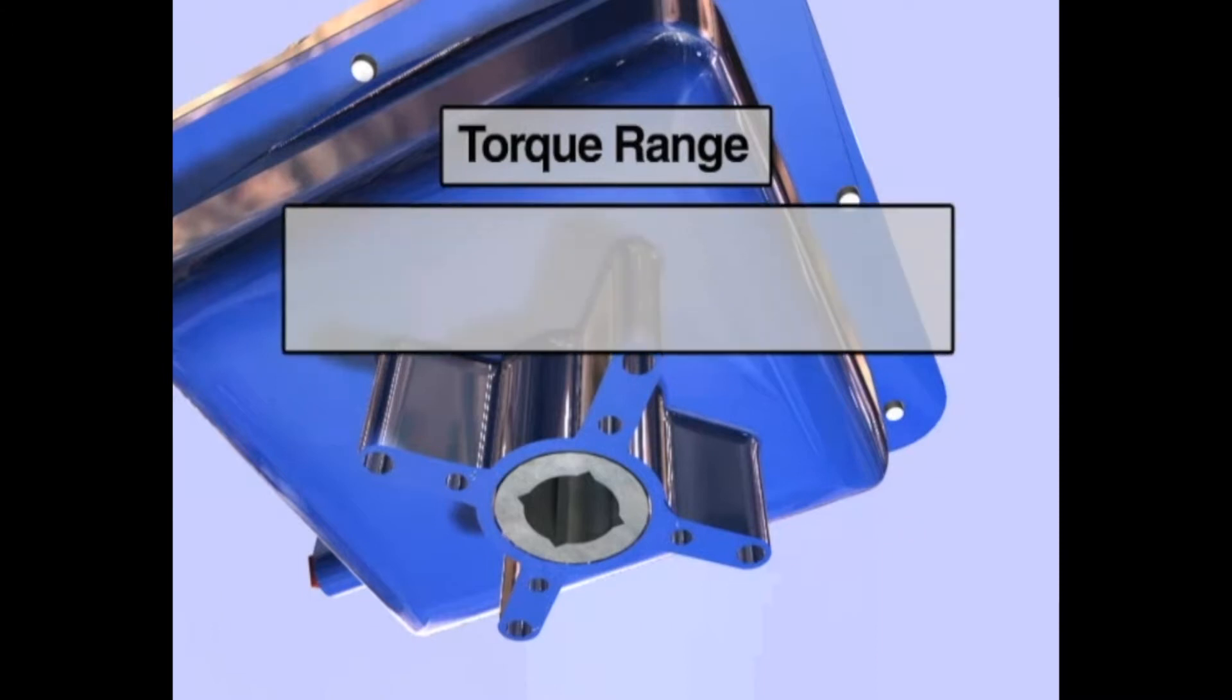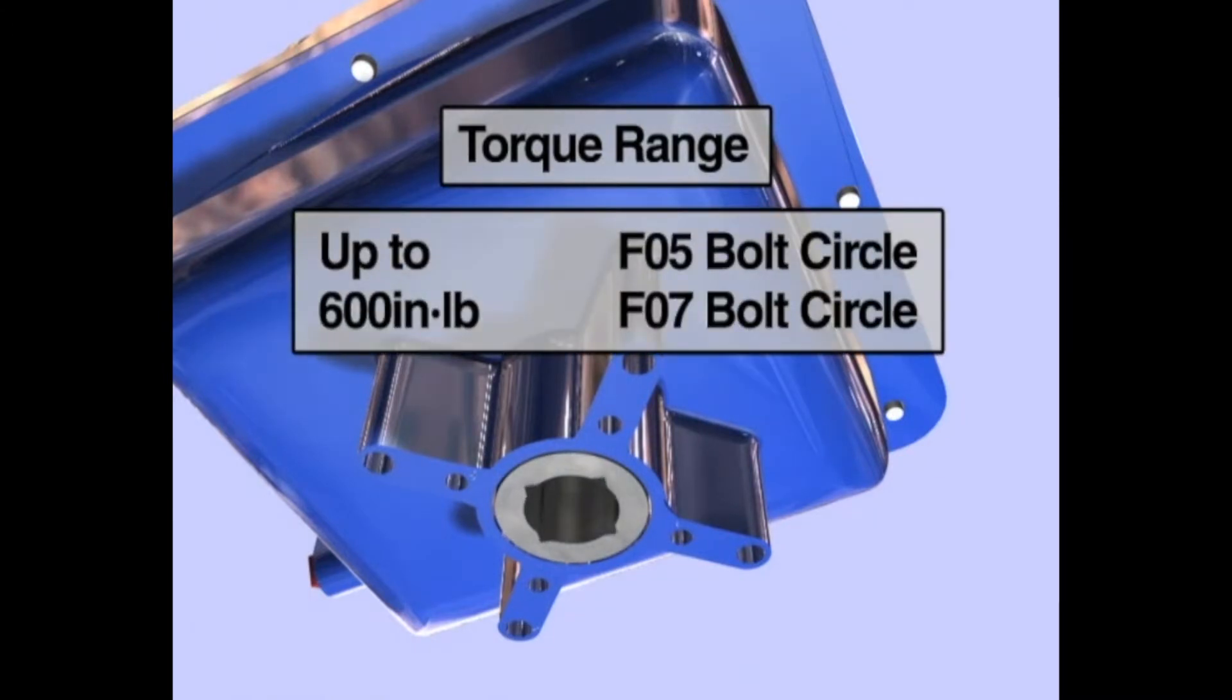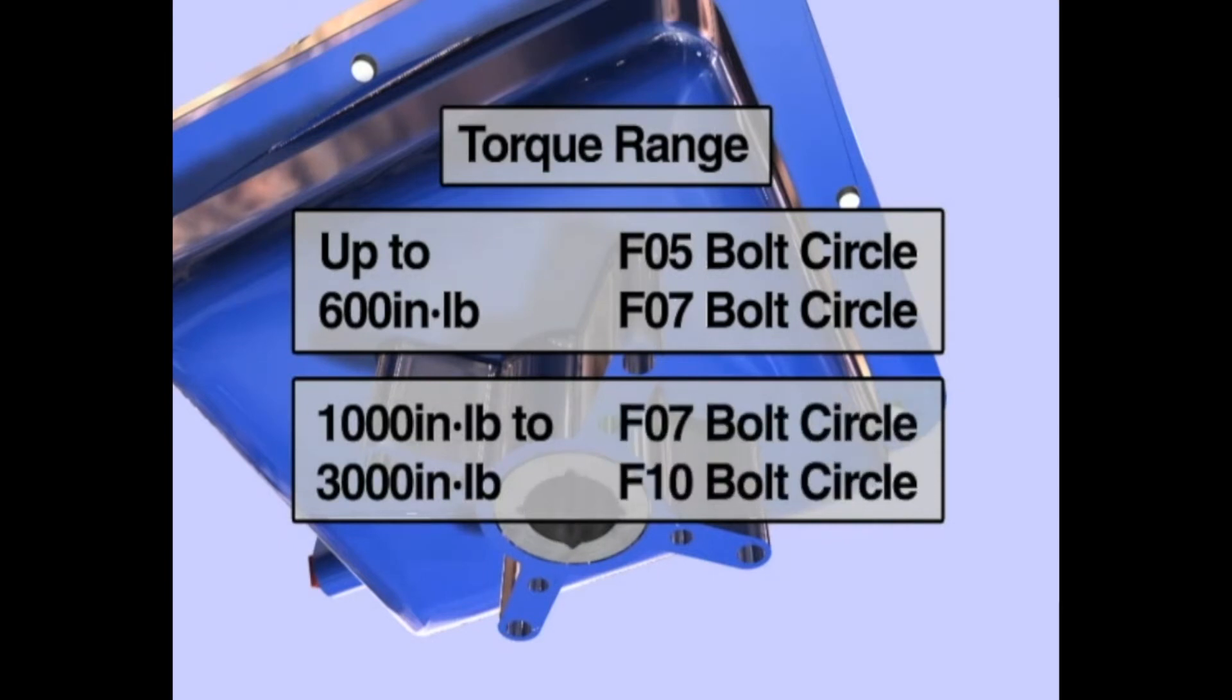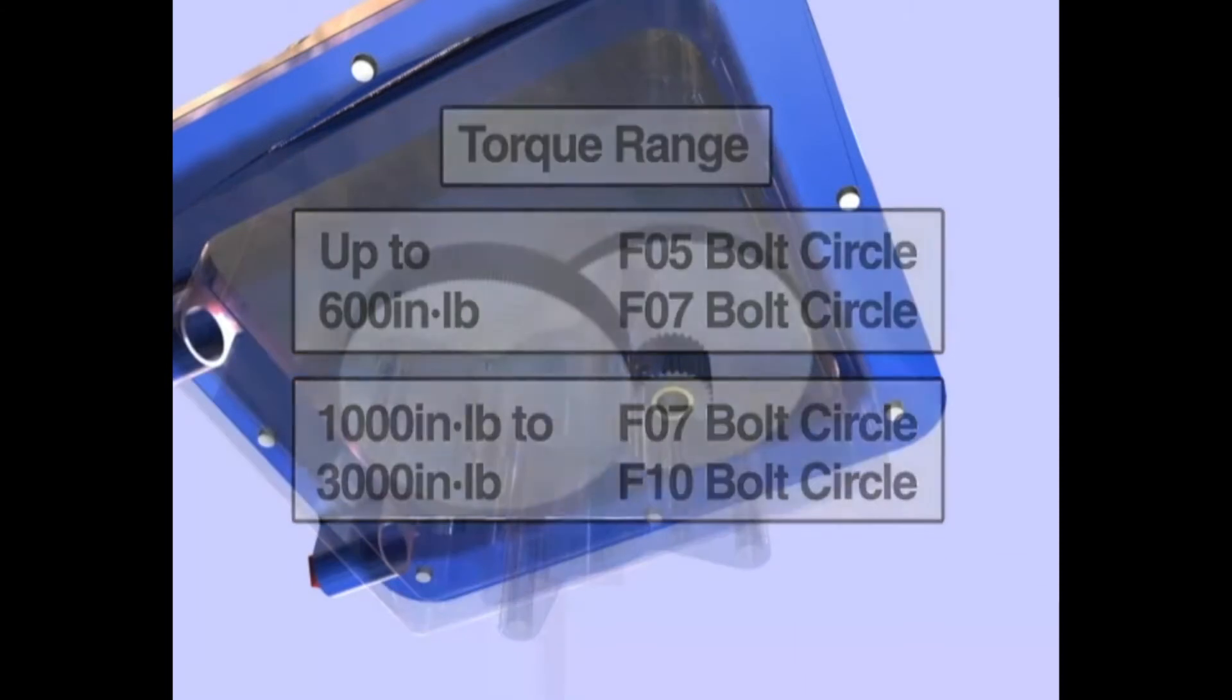For torque output up to 600 inch-pounds, the small V-Series enclosure provides F05 and F07 bolt circles. For torque output of 1,000 to 3,000 inch-pounds, the large V-Series enclosure provides F07 and F10 bolt circles. Female square output drives can be ordered in either metric or standard dimensions.